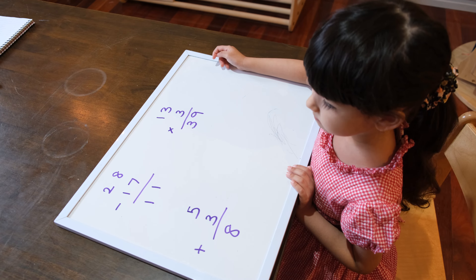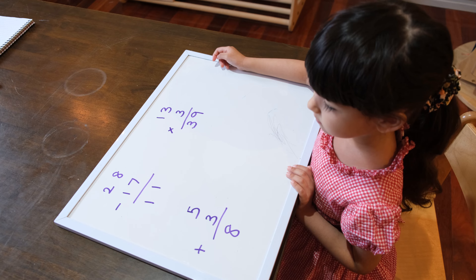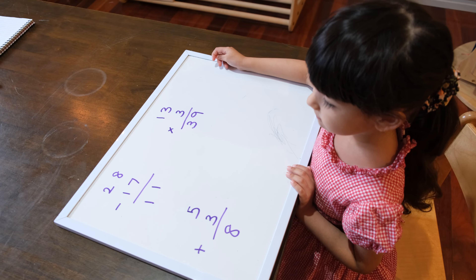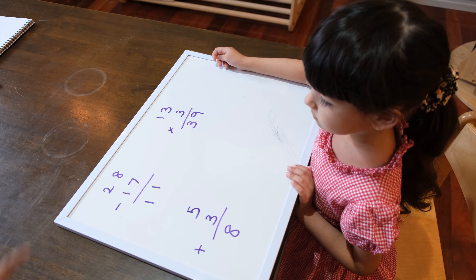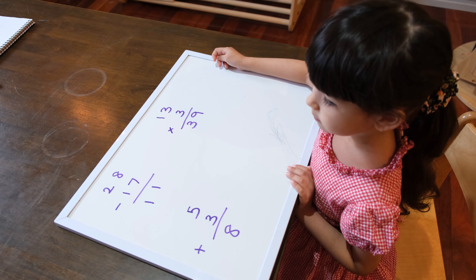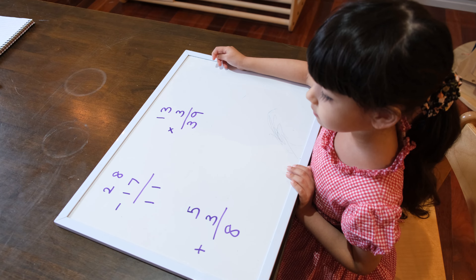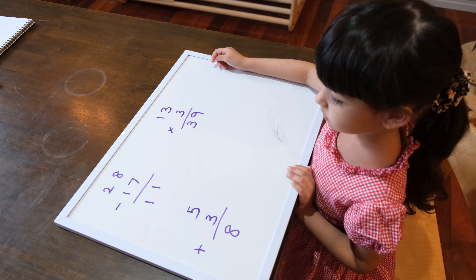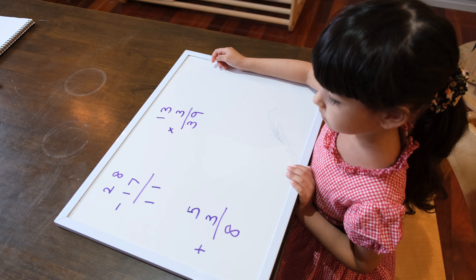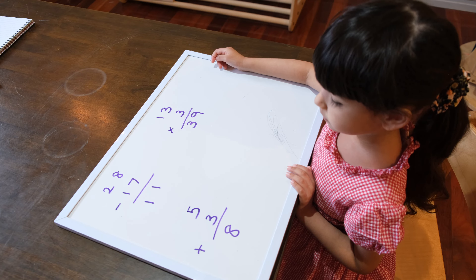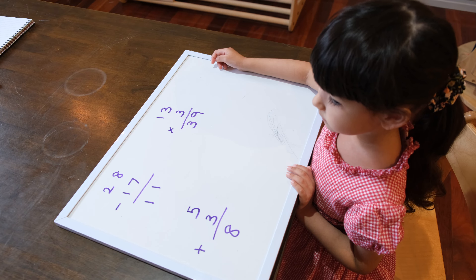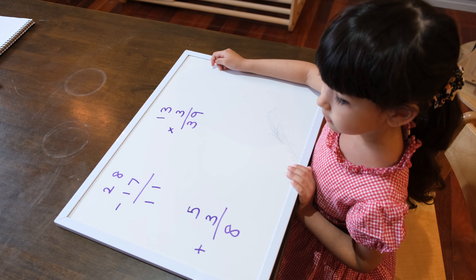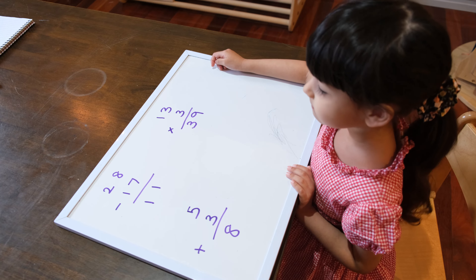And then in a subtraction equation, what do we call the answer? Difference. And what do we call the top number? Minuend. And the bottom one — what do we call that number, the amount we're subtracting? Subtrahend. That's right. Good job, Judy.